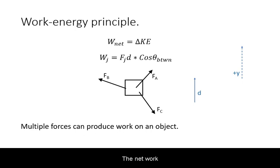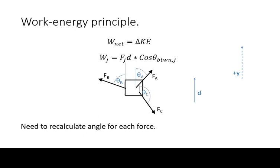The net work is the sum of work done by all the forces acting on the object. The work done by each force is equal to the magnitude of that force times the displacement times the cosine of the angle between the force and the displacement. When calculating that work you must recalculate the angle for each force.